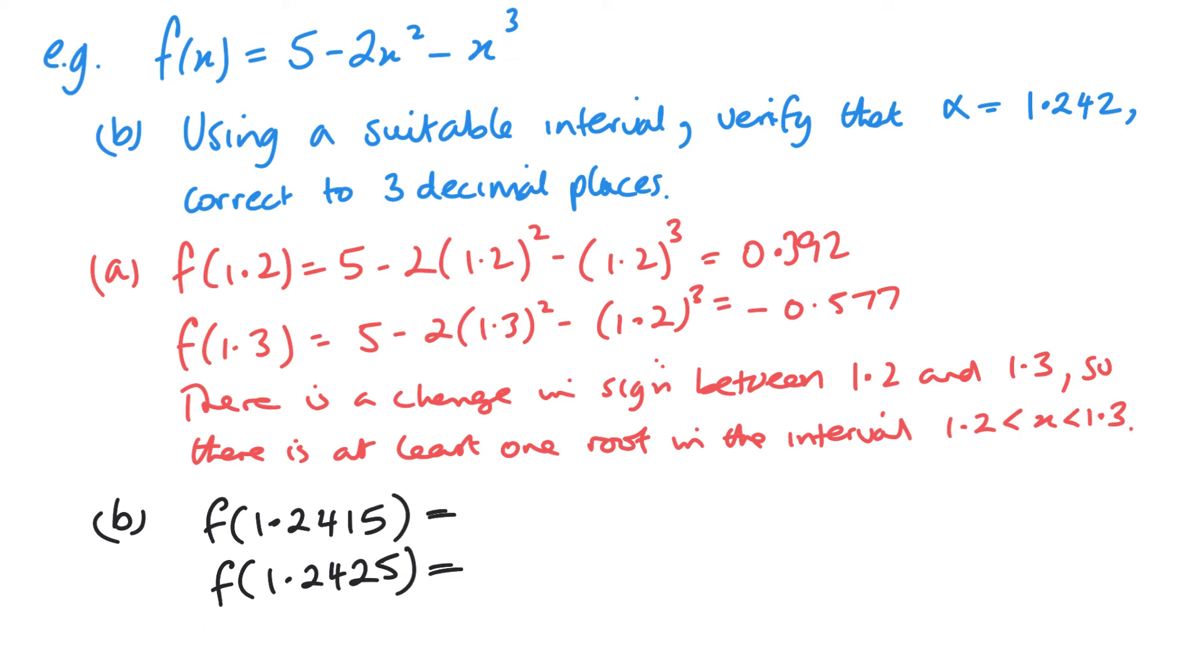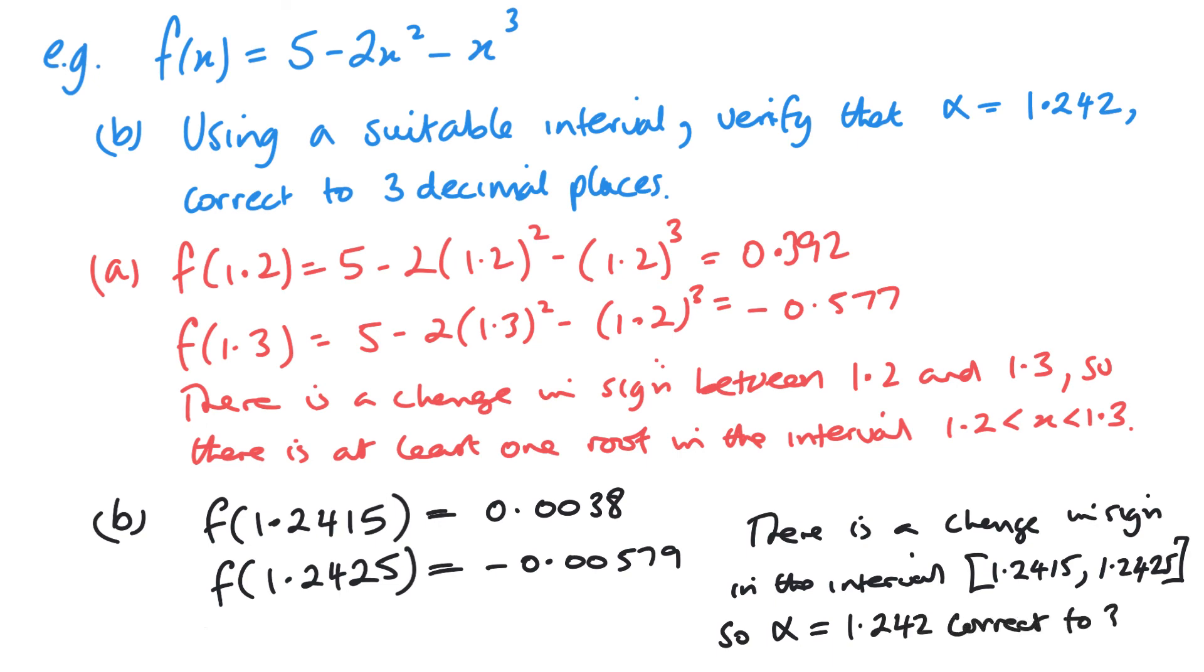Now I just need to substitute these in, show there's a change in sign, and that will verify that this is the correct answer to three decimal places. So for the first one, we get 0.0038, and the second we get negative 0.00579. And then again, we can go and make a statement. There is a change in sign in the interval 1.2415 and 1.2425. So therefore, alpha equals 1.242, correct to three decimal places.